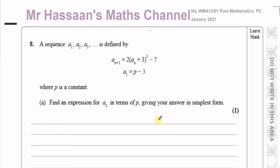This question is about sequences and recurrence relationships. A sequence a1, a2, a3, and so on is defined by a(n+1) equals 2 times (an + 3) squared minus 7, and a1 equals p minus 3, where p is a constant. Find an expression for a2 in terms of p, giving your answer in its simplest form.